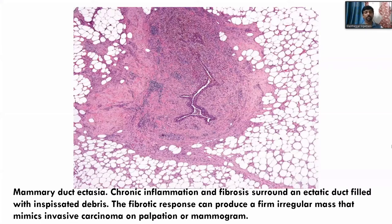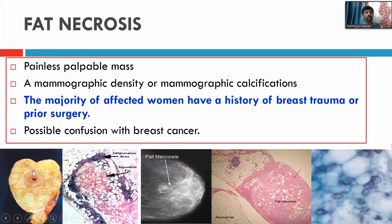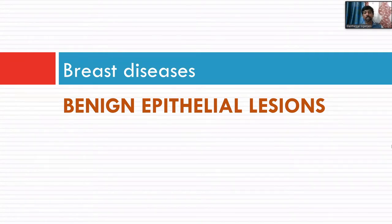Fat necrosis is clinically very important because in imaging and even clinically it may mimic a carcinoma. Mammographic density and calcification can be present in fat necrosis. The majority of affected women will have a history of breast trauma or prior surgery — that is the clue that you are dealing with fat necrosis. Histologically you can see normal breast tissue alongside areas of fat necrosis with fat droplets appearing as hazy areas.